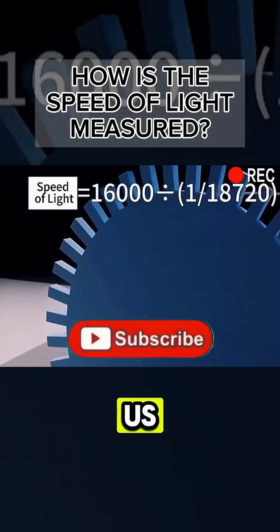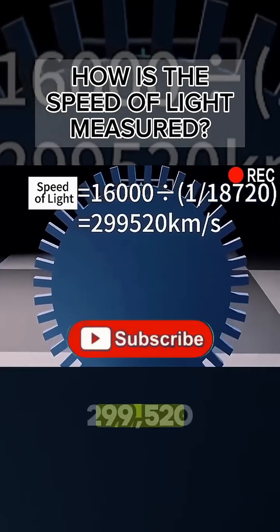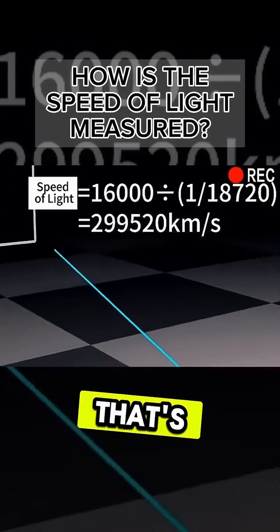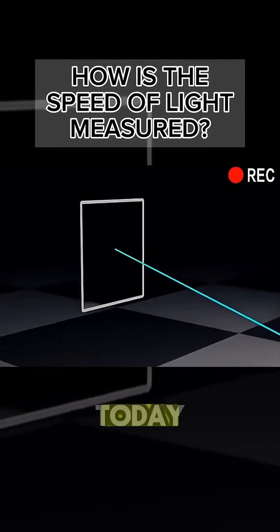Adding this to the formula gives us the speed of light as 299,520 kilometers per second. That's not far off from what we know about the speed of light today.